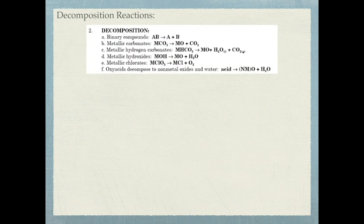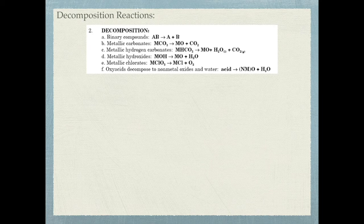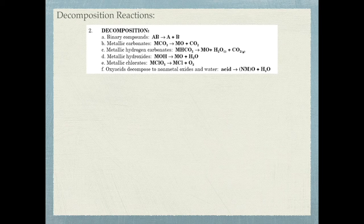Now let's look at decomposition reactions. Decomposition reactions are exactly how they sound — one compound breaks apart into other compounds. For 2A, a compound breaks into its elements. For 2B, a metal carbonate like Na2CO3 or MgCO3 breaks into a metal oxide and carbon dioxide. For 2C, a metal bicarbonate MHCo3 breaks into a metal oxide, water, and carbon dioxide. For 2D, a metal hydroxide (a base) breaks into a metal oxide and water — the reverse of the synthesis reaction.